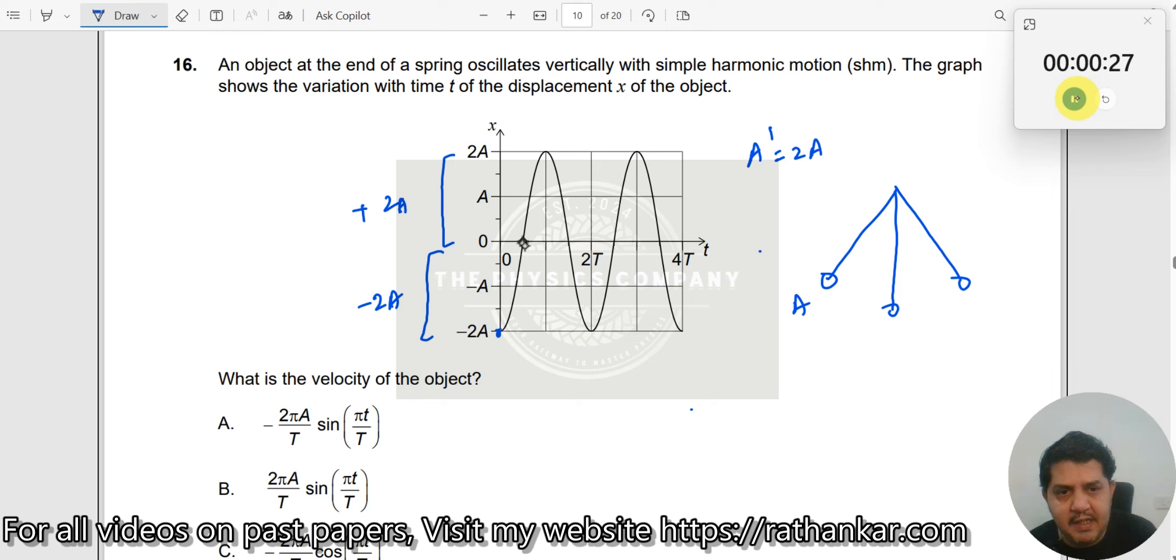At t equal to some value, it was at the mean position. So the pendulum is going like this. What kind of equation is this? This equation should be x is equal to minus 2a cos of omega t. This should be the equation.